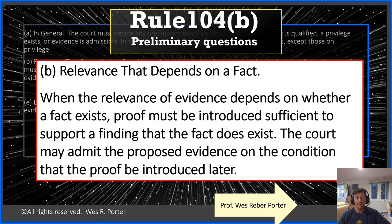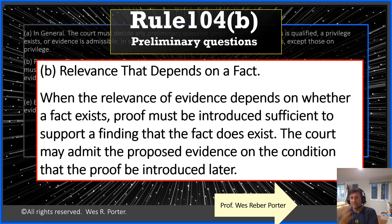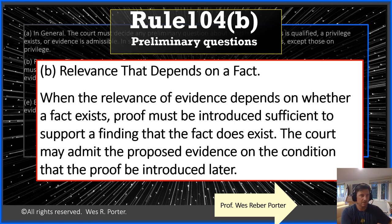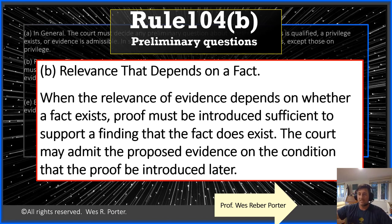Rule 104(B) handles something entirely different: conditional relevance. Sometimes you're arguing to get something in, and it's dependent on a fact being true. Maybe due to the order of trial, you're out of sequence — you're trying to introduce a photograph, for instance, but you haven't yet proven the fact that makes the photograph relevant. Imagine a door that appears to have a bullet hole in it. You want to introduce that photo, but the opposing argument will be that it wasn't a bullet hole — it was a blowtorch — and a different witness will establish the blowtorch evidence later.